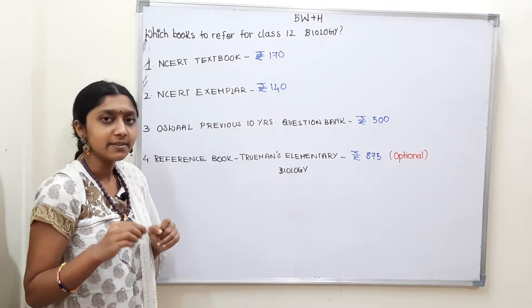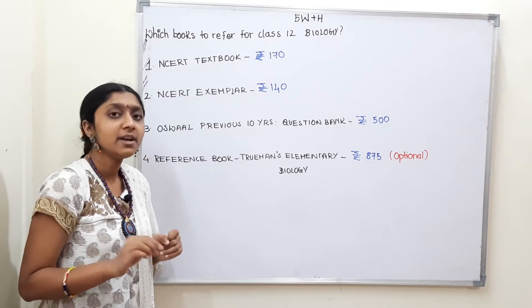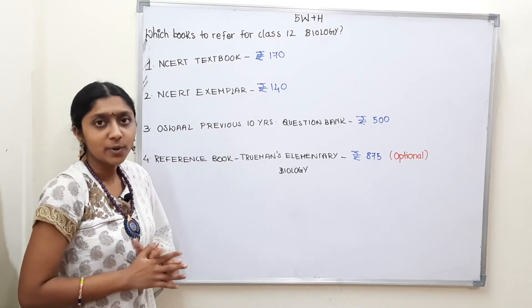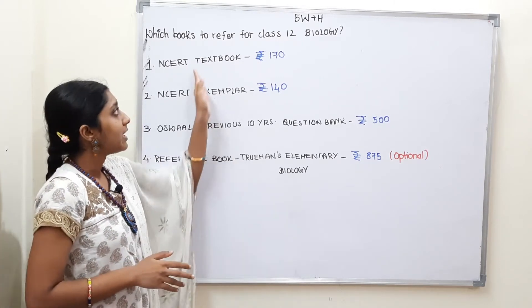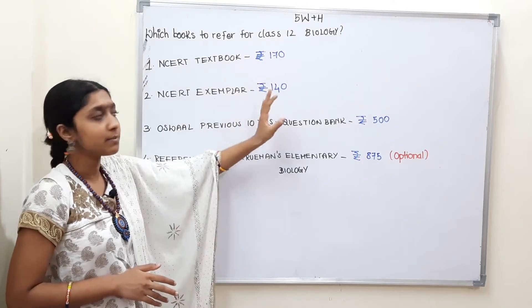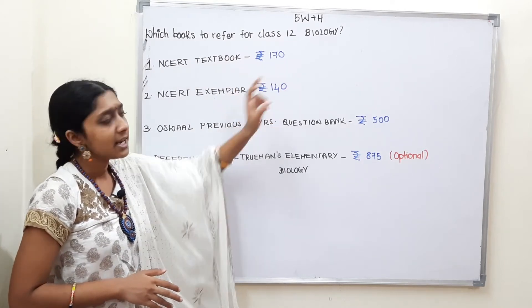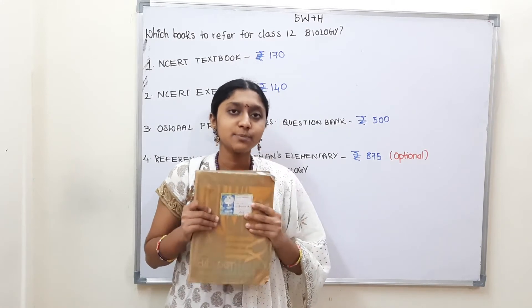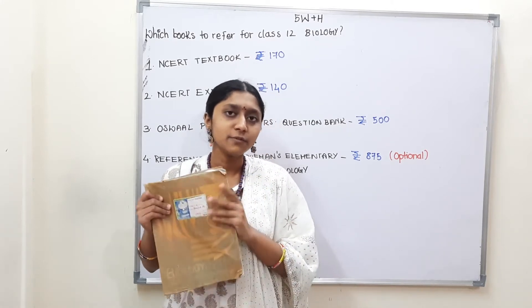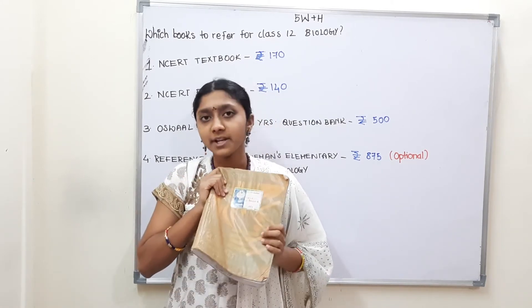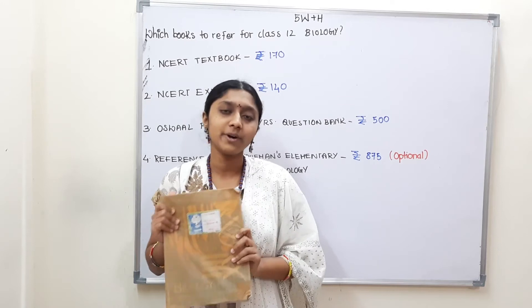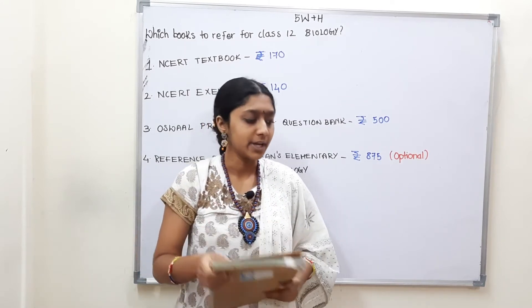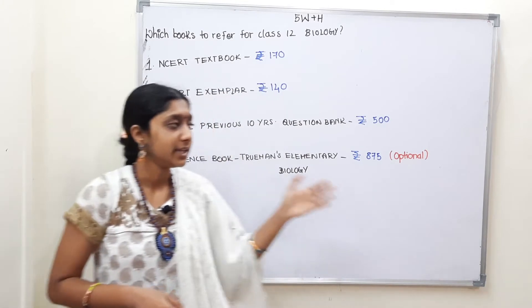Read it line by line, every single line, from the first chapter to the last chapter. The NCERT textbook for Biology is approximately 170 rupees. Read it thoroughly from the first page to the last page. That is how important this textbook is.